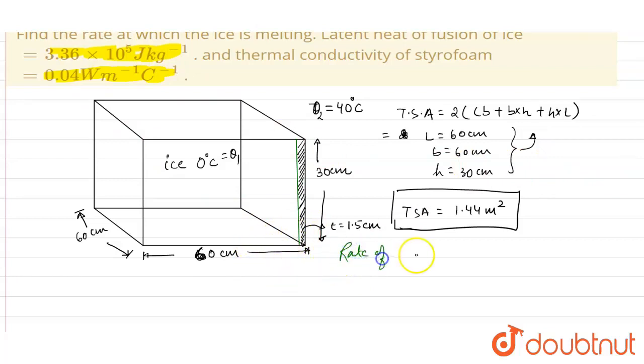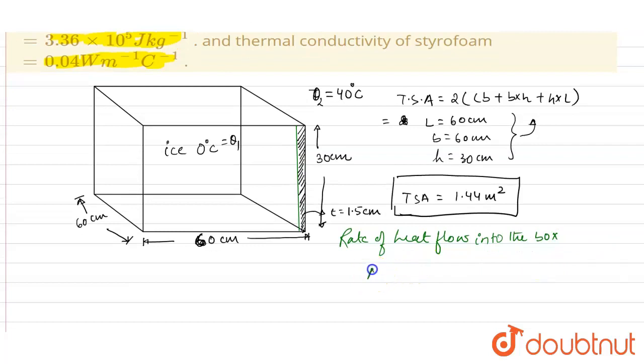Rate of heat flow into the box, so this will be ΔQ/ΔT (capital T denoting the time) is equal to k·A·(θ₁ - θ₂) divided by the thickness t, divided by the thickness t, that is 1.5.